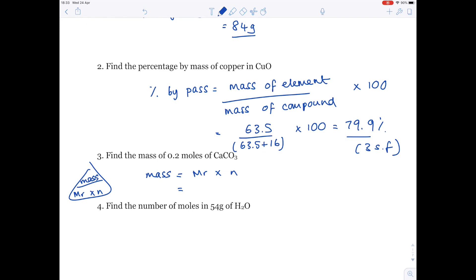The MR of calcium carbonate, so that's going to be 40, plus 12, plus 3 lots of oxygen, so 3 times 16, times the number of moles we've been given is 0.2. So, that's 100 times 0.2 equals 20 grams.